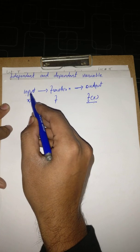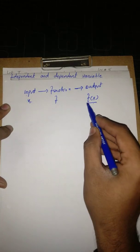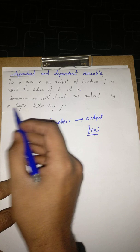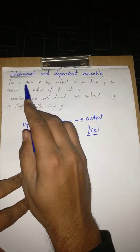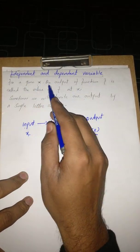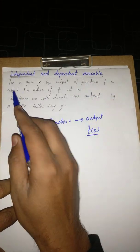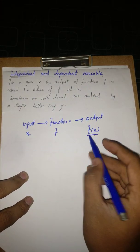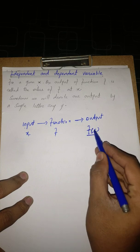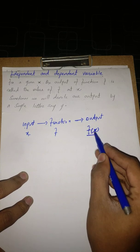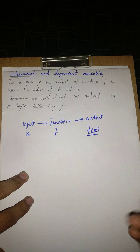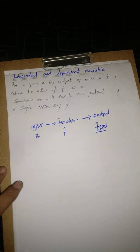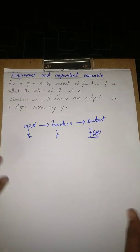So the meaning of F of X is the value of F at point X, and X is our input value. For a given X, the output of function F is called the value of F at point X.